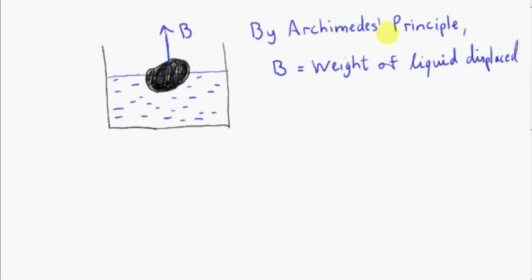Archimedes' principle still holds. In this case, the liquid displaced by the object could be found by considering the part of the object that's immersed, this part here, and realizing that the volume of this part of the object that's immersed is equal to the volume of the liquid that's displaced.